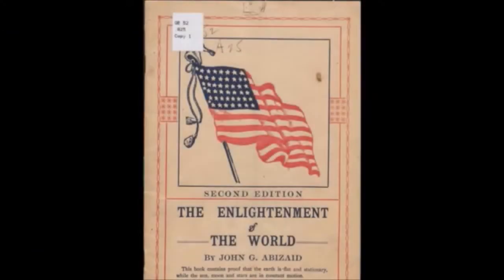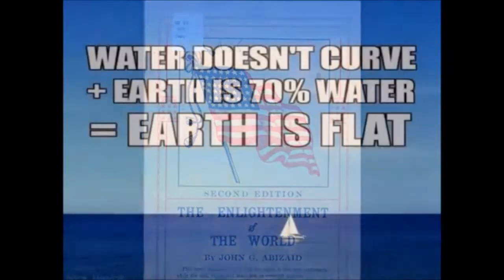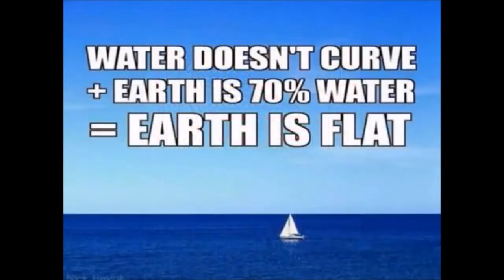The Enlightenment of the World by John Abazade. Chapter 1: The Water. You know that there is more water on the earth than dry land. Here is the first proof. The water proves that the earth is flat, level, and stationary.